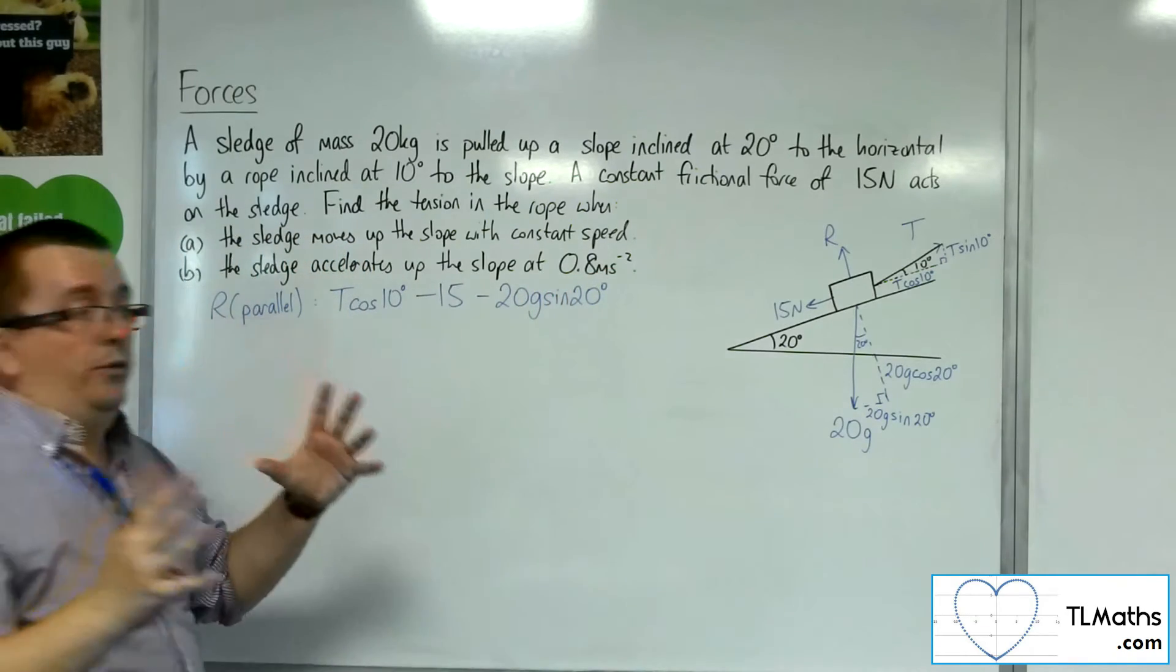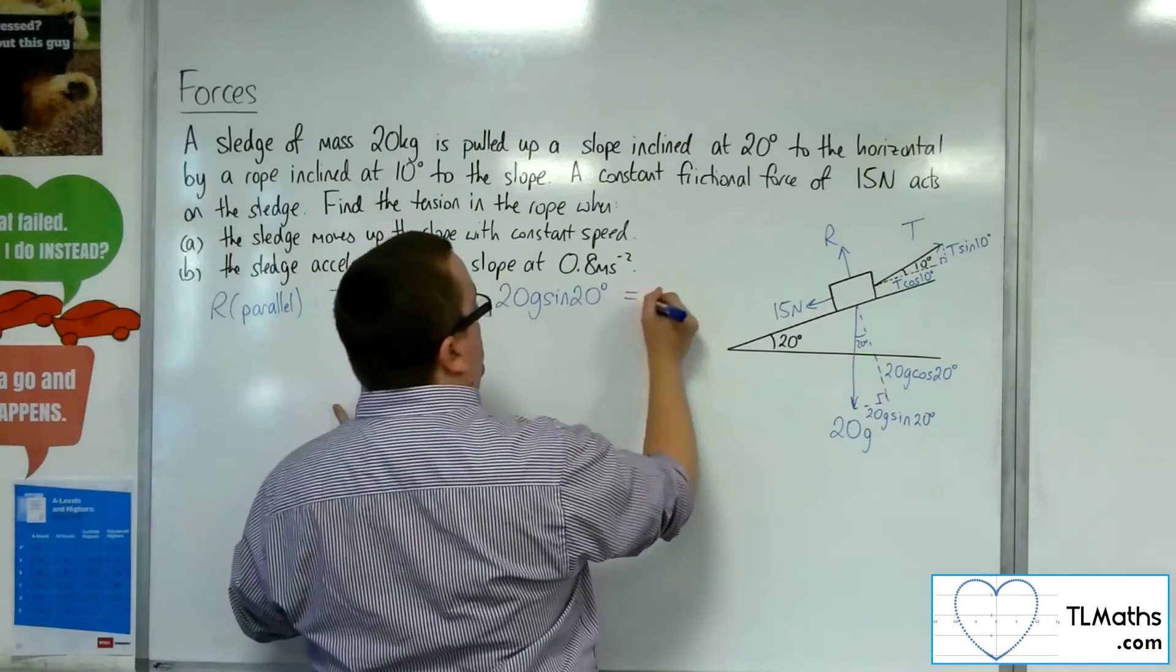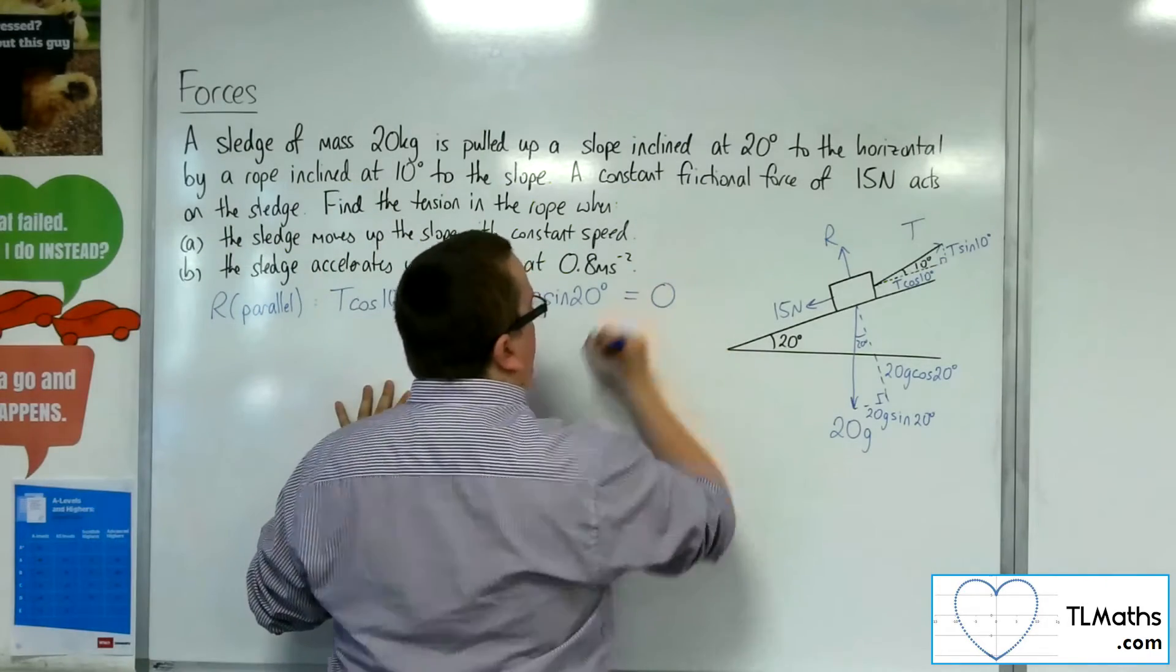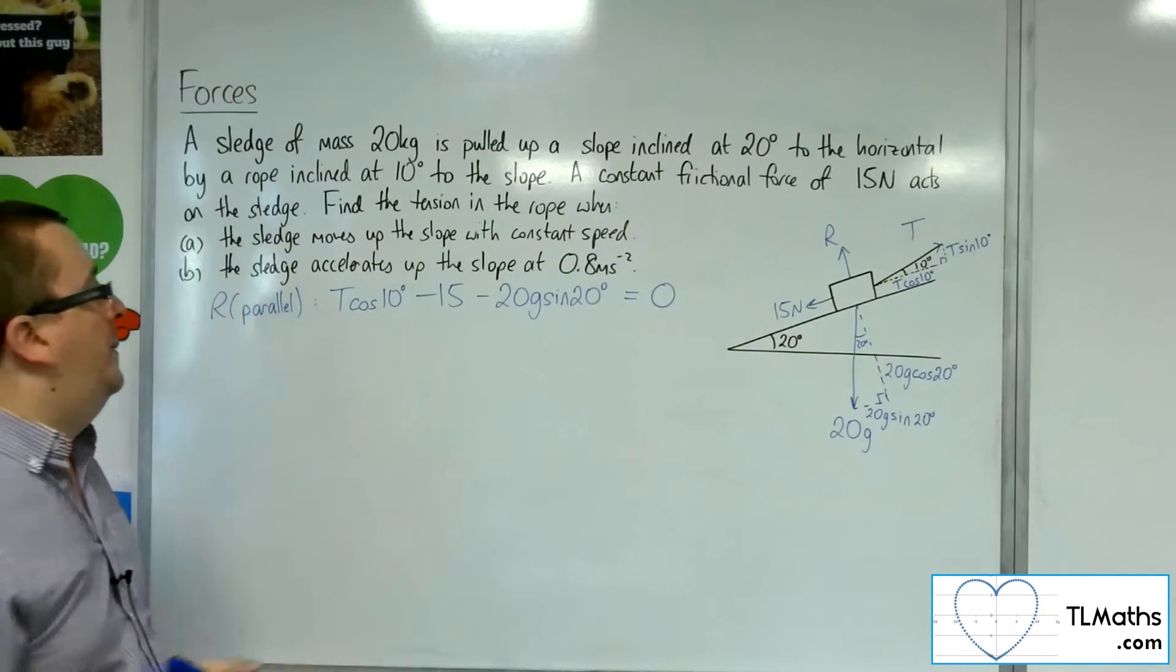And that's got to be equal to the mass times the acceleration. Well, the acceleration is 0 in this case, because we're at constant speed.